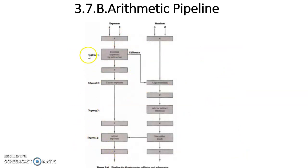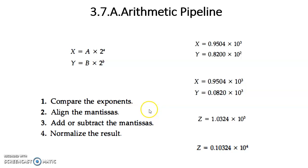This sequential process is shown in the diagram: the first segment compares the exponents, the second segment aligns the mantissas if there is a difference, the third segment adds or subtracts the mantissas, and the fourth segment normalizes the result — because an integer part is not allowed in floating point representation, only mantissa and exponent. For example, 1.0324 is normalized to 0.10324 × 10⁴. This is how floating point numbers are added or subtracted, and this arithmetic pipeline uses the pipeline concept for these arithmetic operations to increase the speed of the process. With four segments, the speed of execution can be increased four times. Thank you.